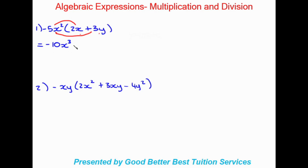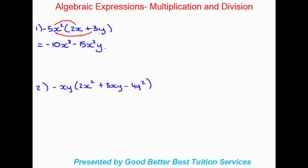Negative 5 times 3 gives me negative 15. Then x squared is timesing y — it's not timesing another x — so it stays the same, giving us x squared y. There are no like terms here, so this is our final answer. When we times out brackets we always check for like terms to bring the expression to its simplest form, but in this case there are none.